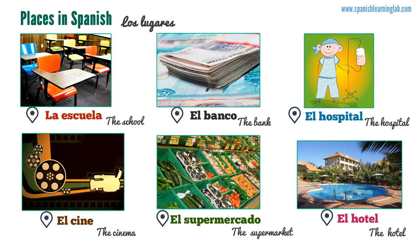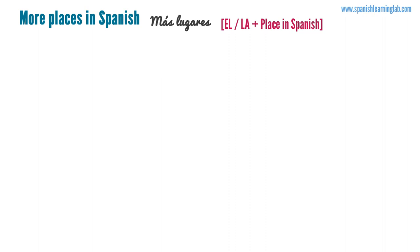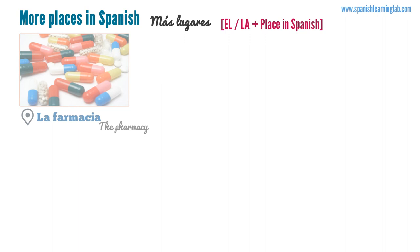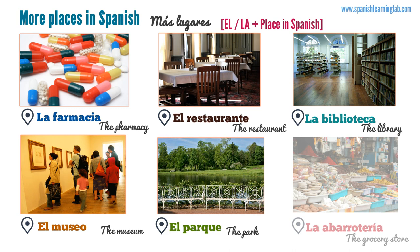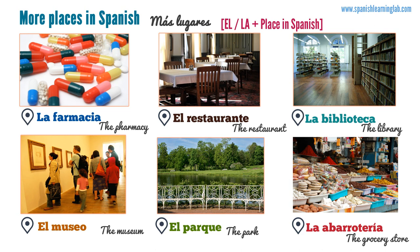Now we will see a second group of places in Spanish. Remember that we use the word 'lugares' in Spanish for places, and these places are usually accompanied by a definite article like 'el' or 'la'. Here are a few more places: la farmacia, el restaurante, la biblioteca, el museo, el parque, and la abarrotería.